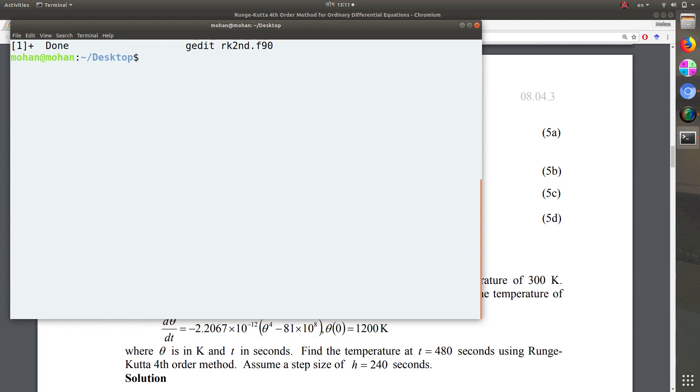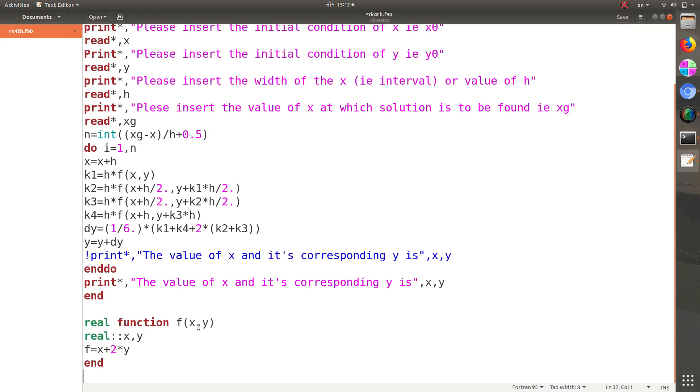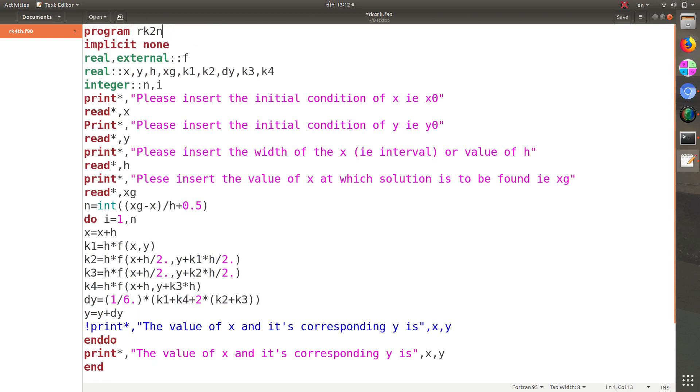Here, clear it and open gedit. The name will be rk4.f90. This is the format. Open this and then paste this in here. We will find the solution of the same function. This is RK fourth, so I would like you to see the three videos serially: first Euler's method, then Runge-Kutta second method, then only fourth method to understand this clearly.